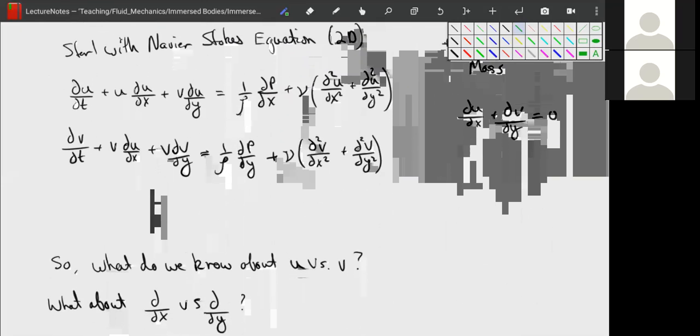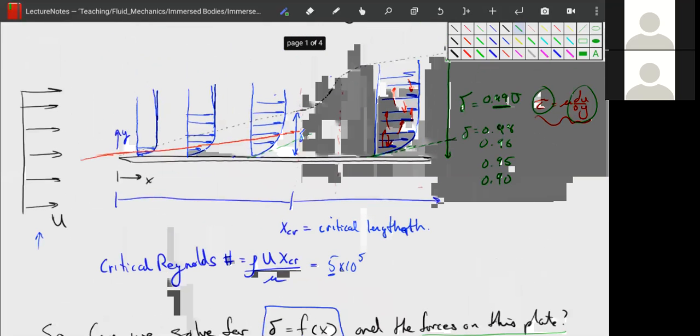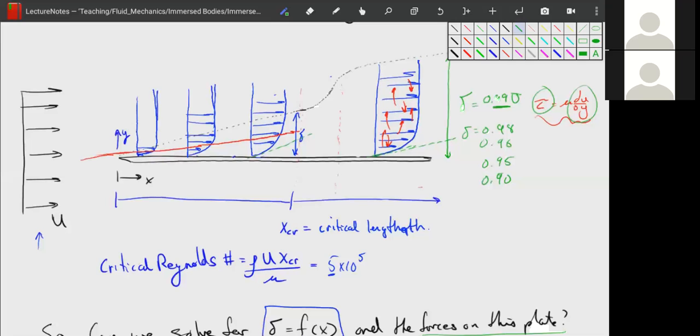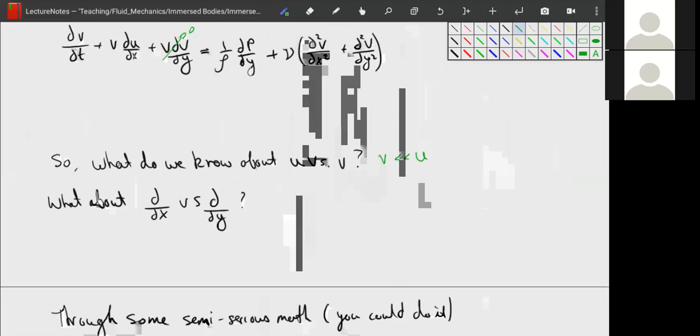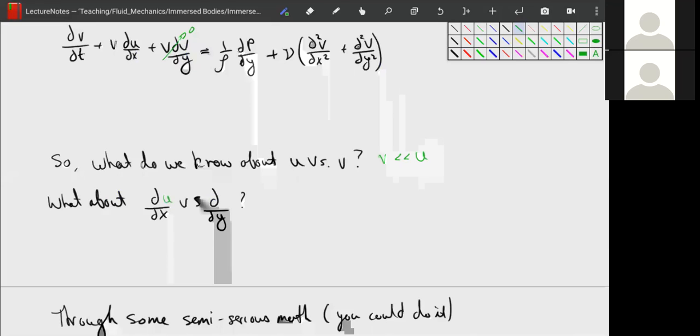So the first question we have to ask ourselves is what do we know about u versus v, what do we know about the u velocity versus the v velocity? And it turns out that while we do have some v velocity, while we do have some flow in the y direction - you see the streamline is slowly moving up because the flow is slowing down so it has to spread out - we do have some v velocity. But our y component of our velocity is much much less than our u component. So if we want to simplify these equations we can take anything that's multiplied by v and basically say it's equal to zero because that's much smaller than the u component here.